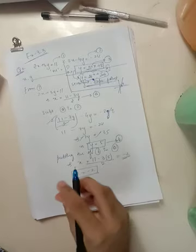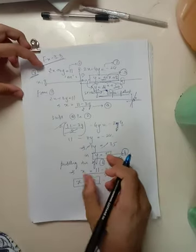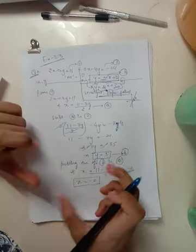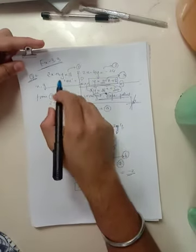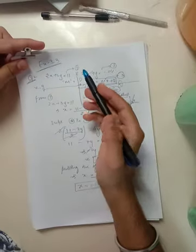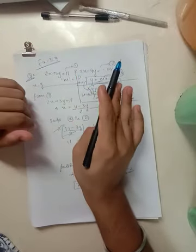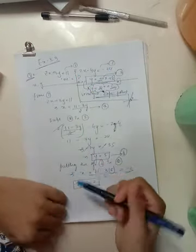And when you have got the answers and if you want to cross check or you want to verify it that whether this answer is correct or not, just take the values of the solution you have obtained and put them back in the original equations you have. If the equation gets satisfied then you could be sure that your answer or the answer you have found is correct.